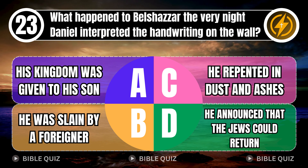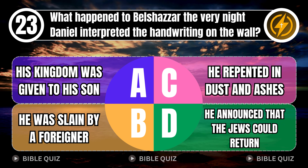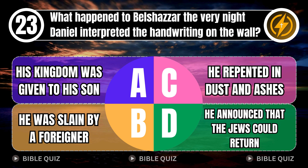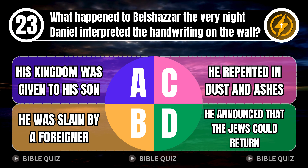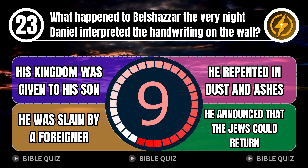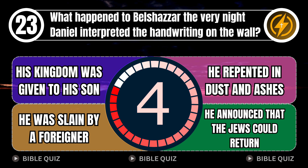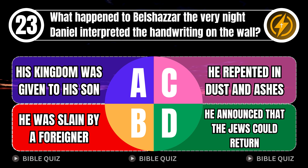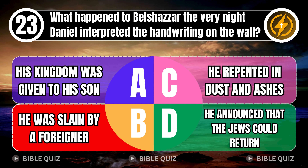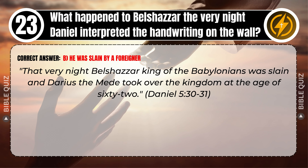Question 23: What happened to Belshazzar the very night Daniel interpreted the handwriting on the wall? A. His kingdom was given to his son. B. He was slain by a foreigner. C. He repented in dust and ashes. D. He announced that the Jews could return. Correct answer: B. He was slain by a foreigner. That very night Belshazzar, king of the Babylonians, was slain, and Darius the Mede took over the kingdom at the age of 62. Daniel 5 verses 30–31.